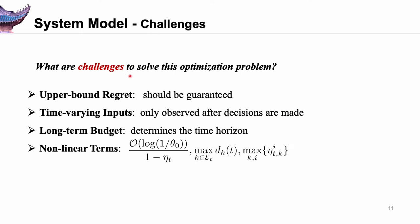Solving this problem is challenging. First, the online solution requires guaranteeing sublinear regret, increasing the difficulty of algorithm design. Second, some dynamic inputs are only observed after control decisions are made. Third, due to the long-term constraint, it is difficult to dynamically manage a limited budget while minimizing the overall latency. Most importantly, the minimization problem is a mixed integer program with nonlinear terms. How can we solve it in an online manner efficiently?